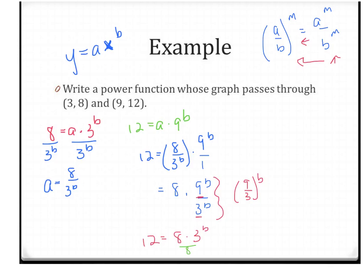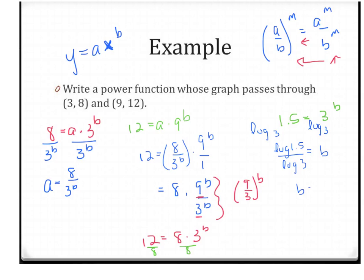Dividing by 8, we get 1.5 = 3^b. To solve for an exponent, we take log base 3 of both sides: log₃(3^b) = b. So b = log₃(1.5), which by change of base is log(1.5)/log(3), giving us b ≈ 0.369.